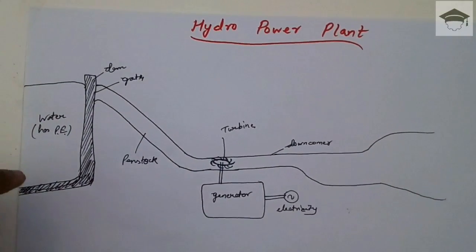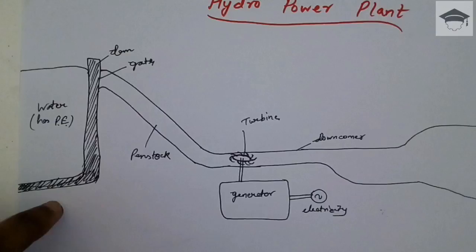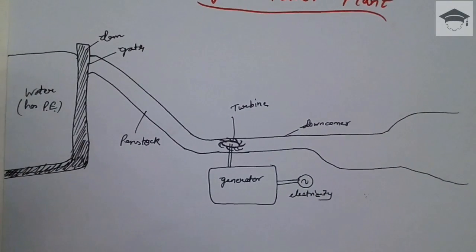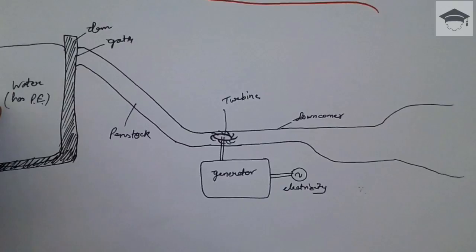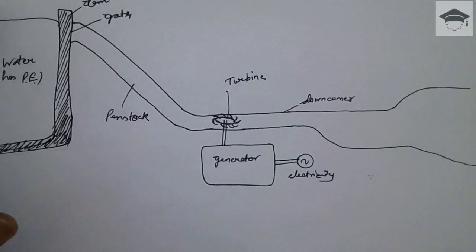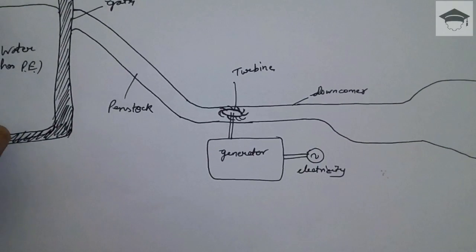This water is at some height, around 50 to 80 meters, and possesses potential energy. This is a penstock. When the gate is opened, the water rushes and moves through this penstock.